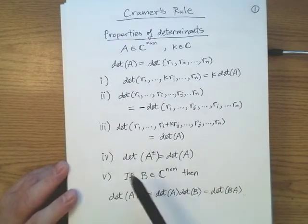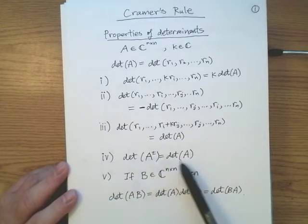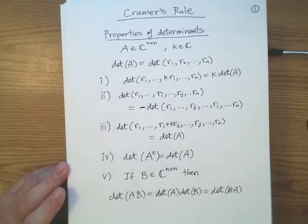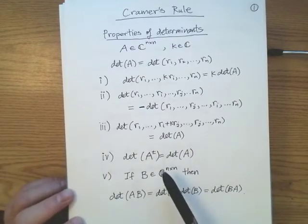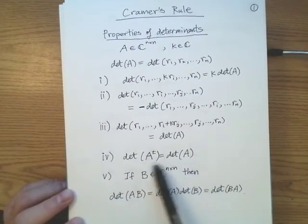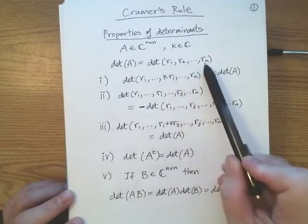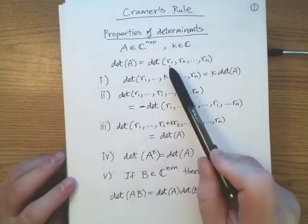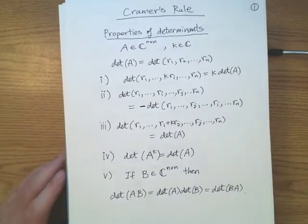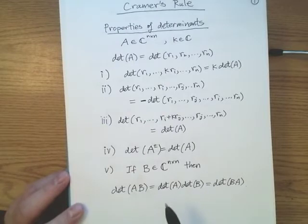From your readings you should have also noticed that the determinant of the transpose of a matrix is the same as the determinant of that matrix — of course that's a square matrix, otherwise it wouldn't be defined. Basically the determinant can't distinguish between rows and columns; I could have columns c1, c2 down to cn and have all the same properties, where the c's stand for columns instead of rows.